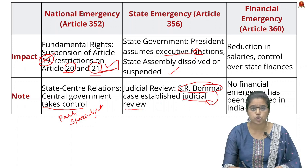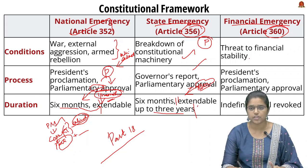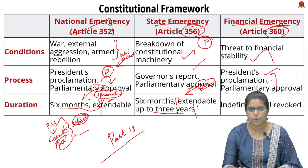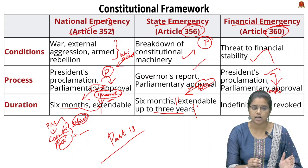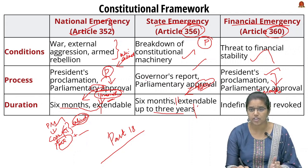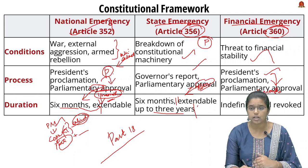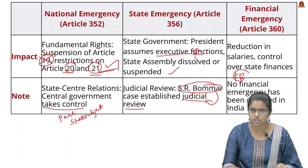The Financial Emergency is provided under Article 360. It is proclaimed by the President if there is a threat to the financial stability of the Indian economy. Parliament must approve it within two months. Unlike the National Emergency and State Emergency which can be extended up to six months, the Financial Emergency is indefinite until the President revokes it. During Financial Emergency, salaries of state and central government employees are reduced, and all financial bills passed in state legislatures require the President's assent.